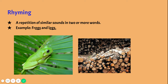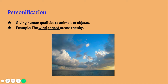Now we're going to talk about rhyming. Rhyming is a repetition of similar sounds in two or more words. For example, 'frogs' and 'logs' — both share the sound 'ogs,' which makes them rhyme. Another example could be 'news' and 'views.'